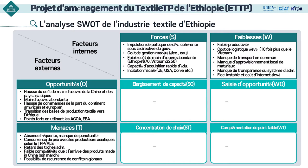Comme les coûts de main-d'œuvre en Asie et en Chine augmentent, l'Éthiopie, qui possède une population riche et jeune avec un coût de main-d'œuvre bon marché, il est probable que les commandes et les sociétés d'investissement en Chine et en Asie se tournent vers l'Éthiopie et l'Afrique. Il s'agit donc d'une excellente opportunité car il y a une tendance à déplacer la base de production textile vers le continent africain. En utilisant l'AGOA ou l'EDA, il y a l'avantage de pouvoir l'utiliser comme base d'exportation vers l'Amérique et l'Europe.